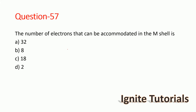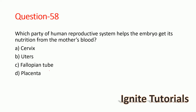Question 57: What is the number of electrons that can be accommodated in the M shell? The correct answer is 18 — 18 electrons can be accommodated in the M shell, so option C is correct. Question 58: Which part of the human reproductive system helps the embryo get nutrition from the mother's blood?